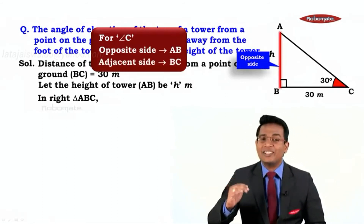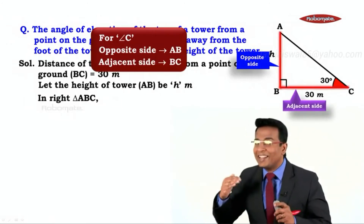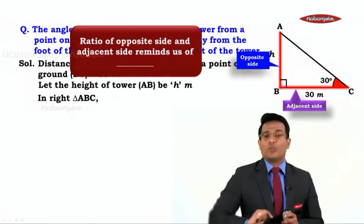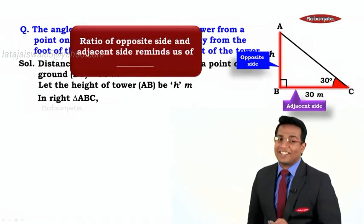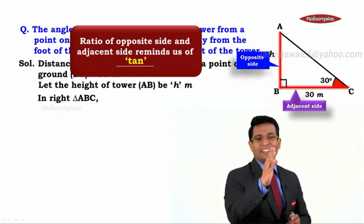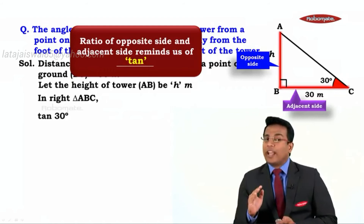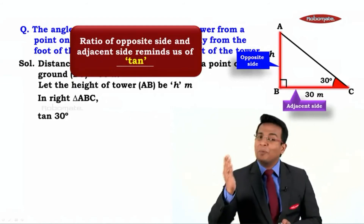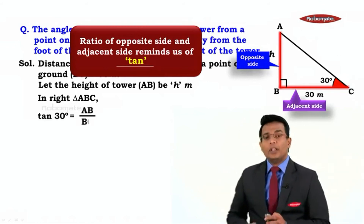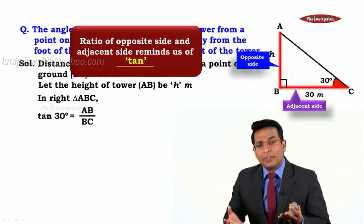With respect to angle C, we need to find AB, which is the opposite side. The given information is BC, which is the adjacent side. So we are dealing with opposite side and adjacent side. The ratio that relates opposite and adjacent sides is the tan ratio. So we apply tan of 30 degrees in right angle triangle ABC.